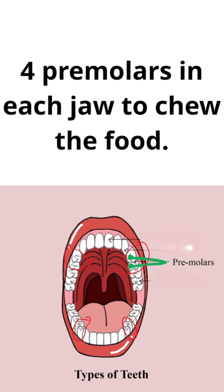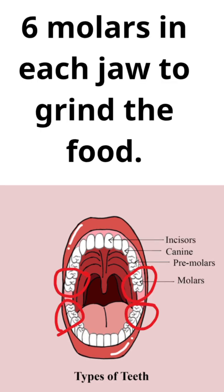Finally, the last type of teeth is molars. We have 3 molars in each side — 6 molars in each jaw — to grind the food.